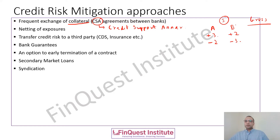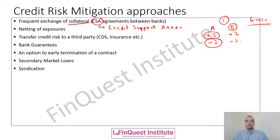Imagine my counterparty B defaults. This means I will firstly lose on the three trades where I am in the money, because my counterparty has filed for bankruptcy and has no money to pay — so I will be exposed to that loss. However, on the two trades where I am holding a negative position, I am still expected to make that payment to them. Because of grossing of exposures, the exposures are grossed up, so those two trades where I am expected to make a payment to them are still alive and I must make good my side of the trade.